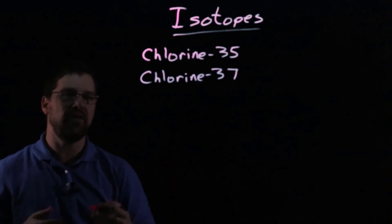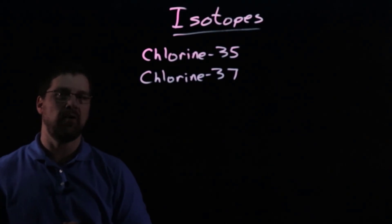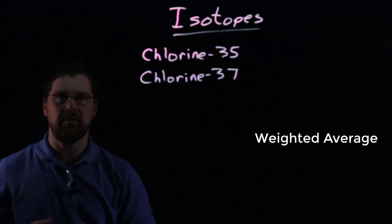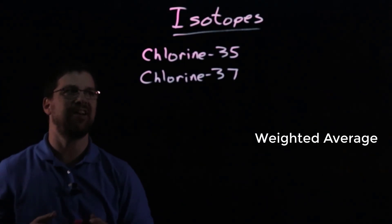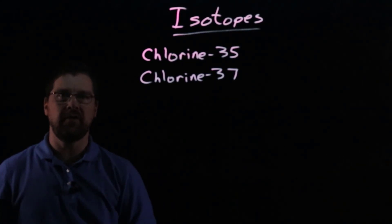And the reason we don't see that is because chlorine-35 and chlorine-37 aren't present in equal amounts. In other words, it's not a 50-50 split. And so what we need to do when we are finding the average atomic mass is take a weighted average in which we take into account not just the masses, but also the percent abundances.